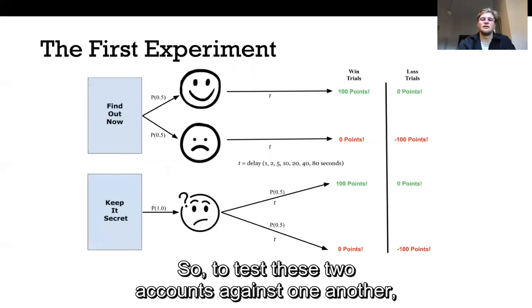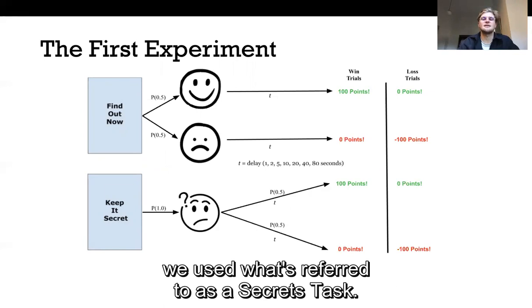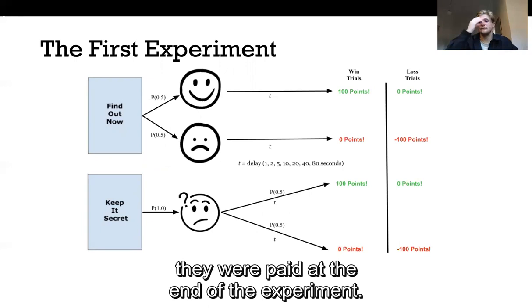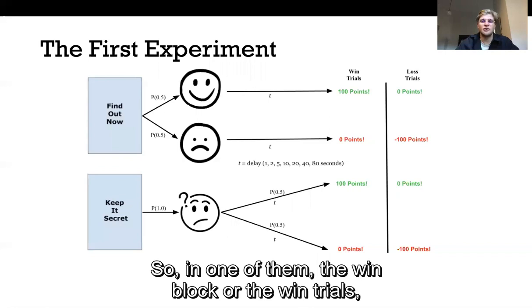So to test these two accounts against one another, we use what's referred to as a secrets task. So in this task people either won points, they lost points, or they received zero points, and these points were equal to actual money they were paid at the end of the experiment.